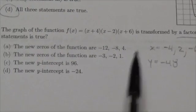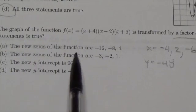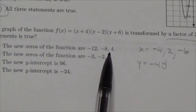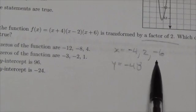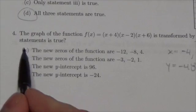The new statement says the new zeros of the function would be negative 12, negative 8, and 4. Well, that is multiplying that by 2. So quite honestly, it looks like the answer is this one. But let's just keep looking here.